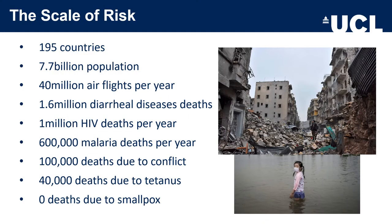So what is the scale of risk? Looking at the world in data: the world comprises 195 countries, population 7.7 billion, with 40 million air flights per year. Deaths due to diarrhoeal diseases are 1.6 million per year, 1 million HIV deaths, 600,000 malaria deaths, 100,000 deaths due to war and conflict, 40,000 due to tetanus, but zero deaths due to smallpox — smallpox has remained eradicated. Recent conflicts such as the Syrian conflict, the explosion in Beirut, and climate change and translocation of people show how easy it is for health systems to collapse.